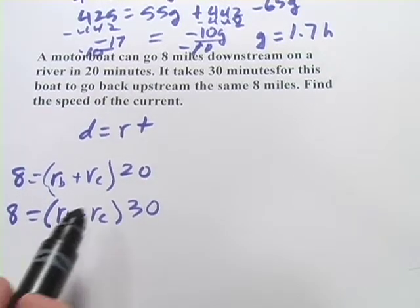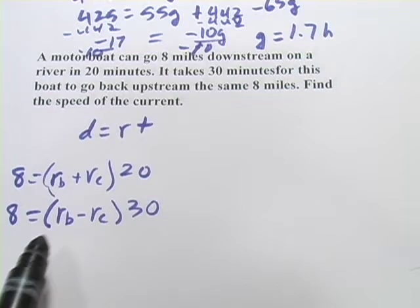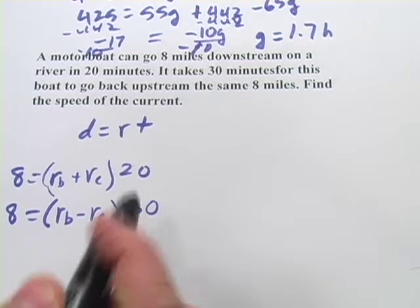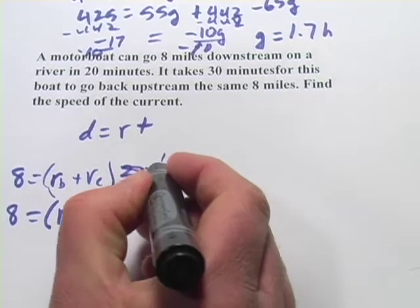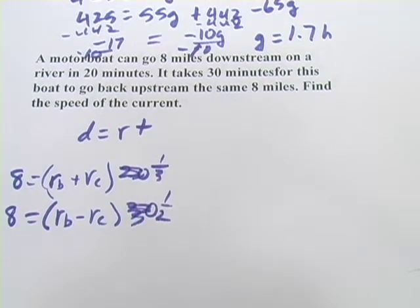The only trick here, the only difficulty I see right now is that we're probably going to be wanting to find the rate in miles per hour. And here we've got minutes. So I probably want to convert these to fractions of an hour. 20 minutes is 1 third of an hour, and 30 minutes is 1 half of an hour. So let's just put that in hours instead of minutes.